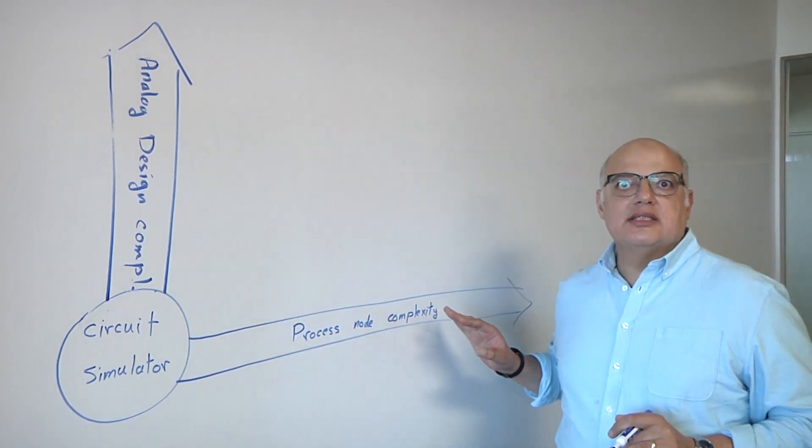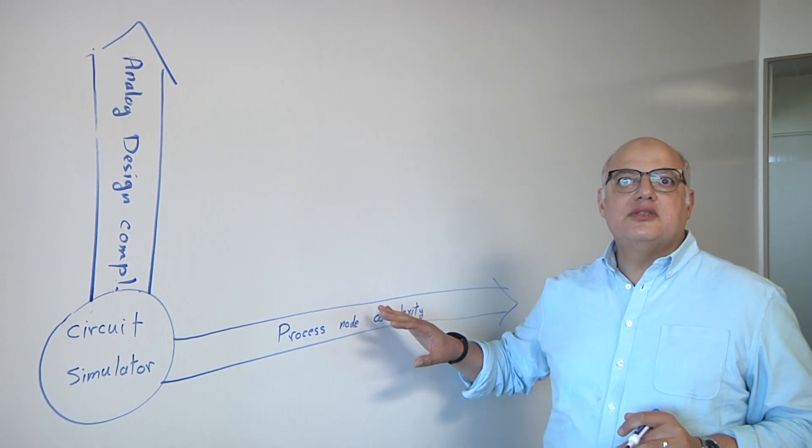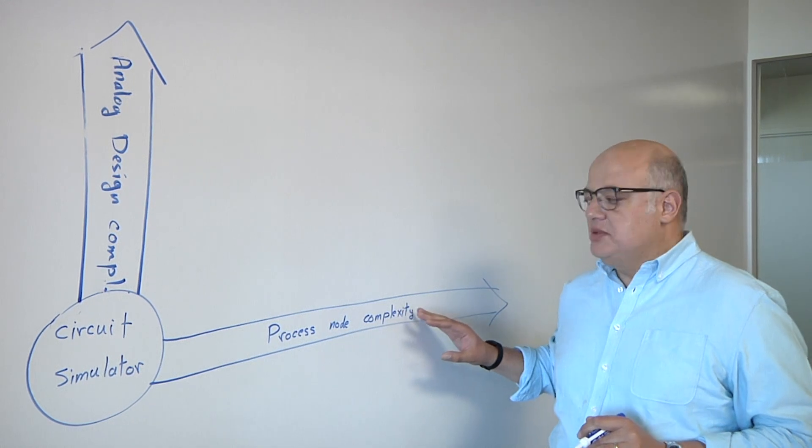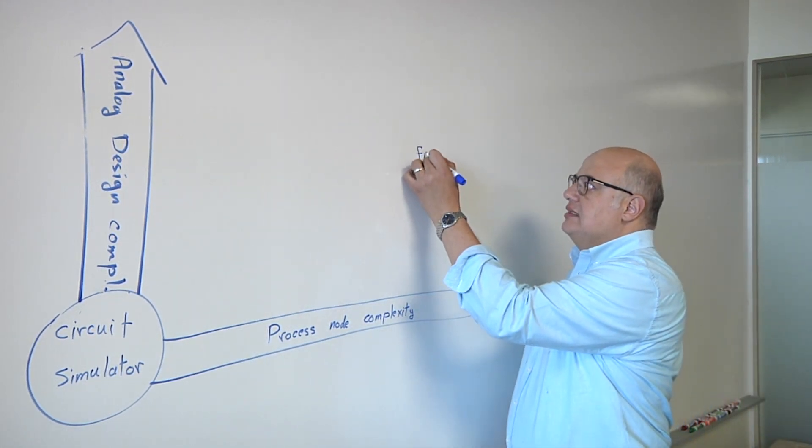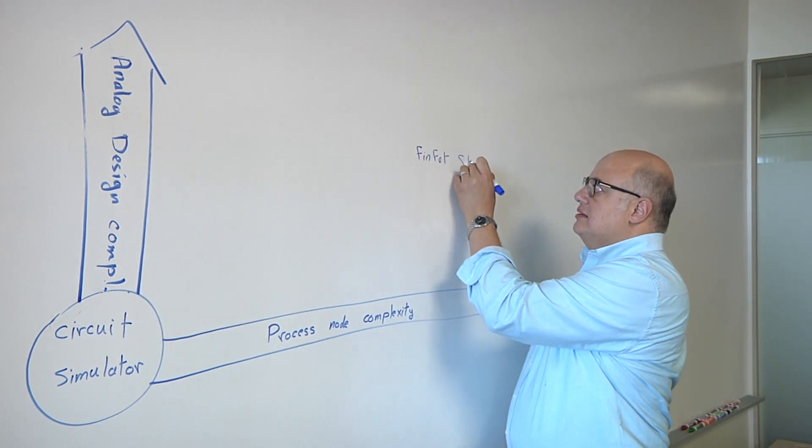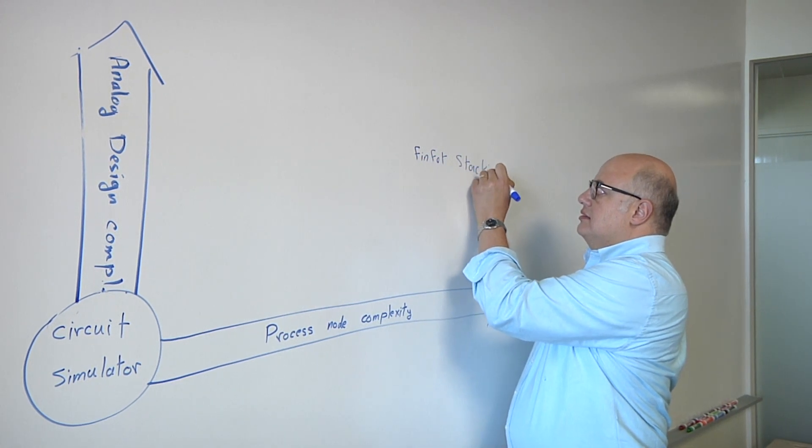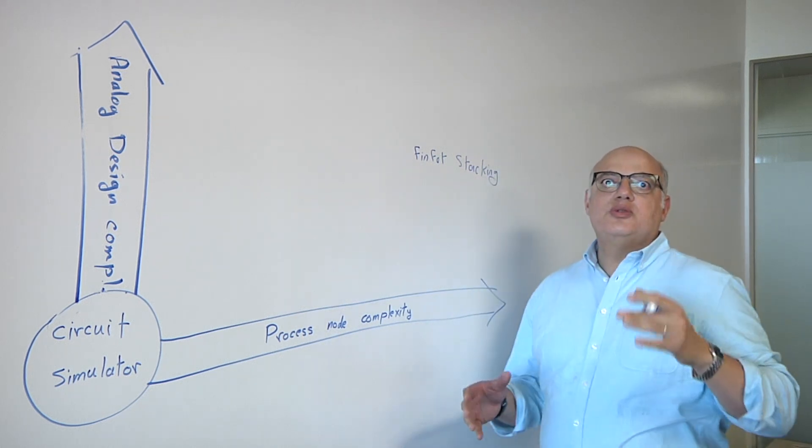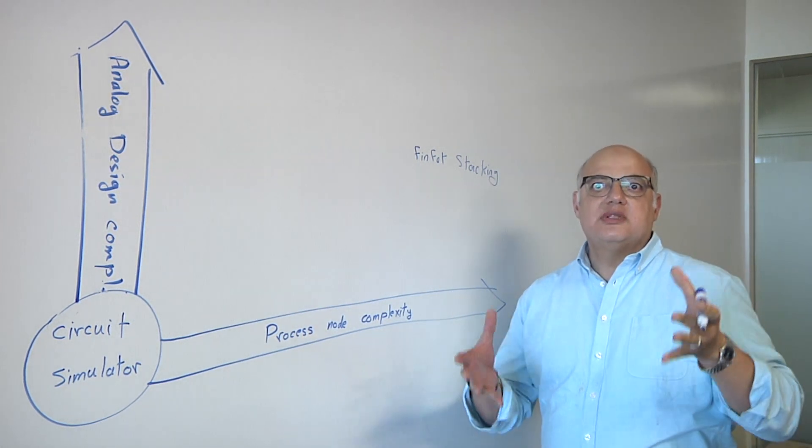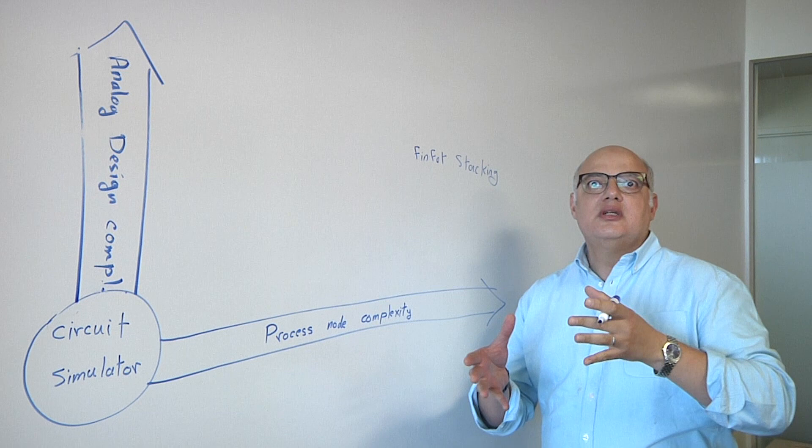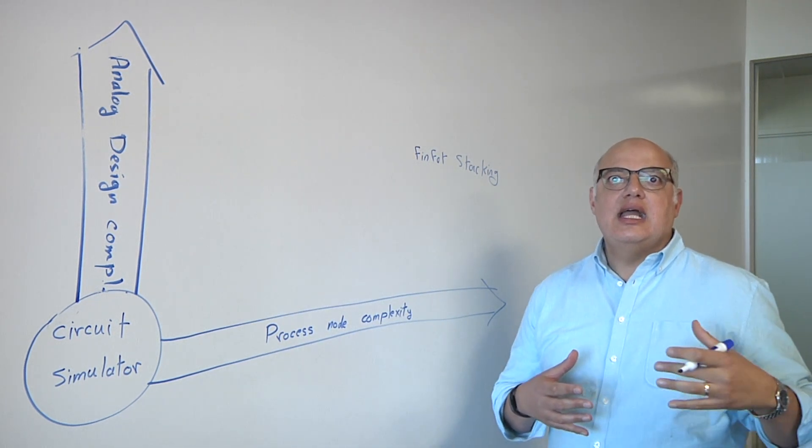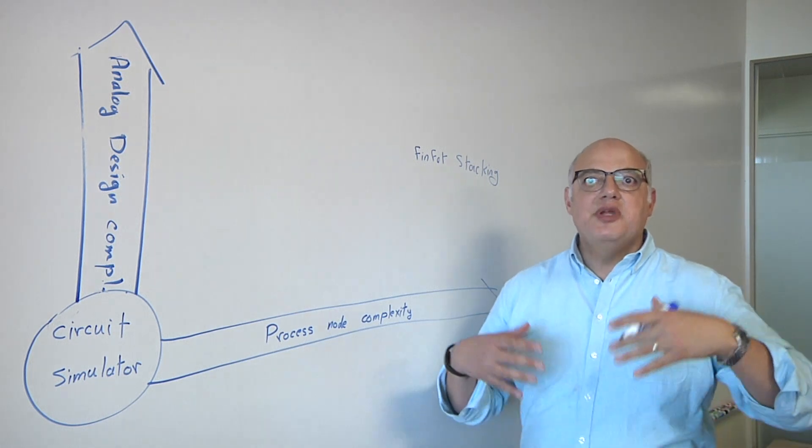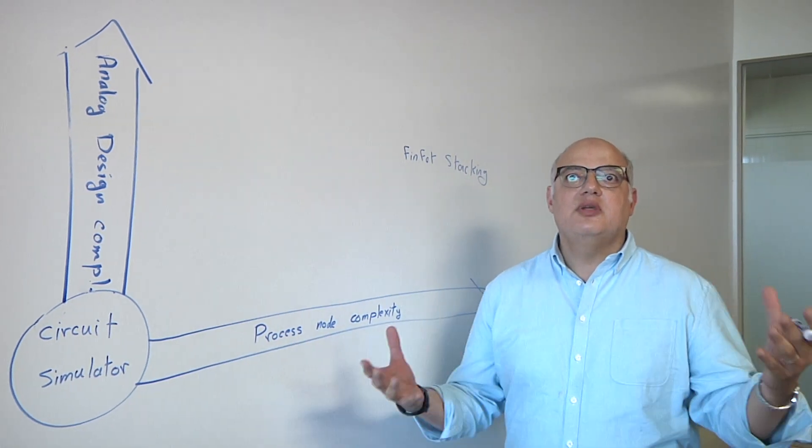There are many different factors that come with process nodes. First, as we discussed, there is the FinFET stacking. The need to use more transistors to perform the same function one transistor that is more flexible in mature nodes could have done. And this means that you have bigger matrices for the analog simulator to handle.